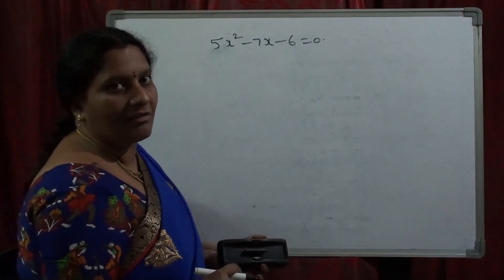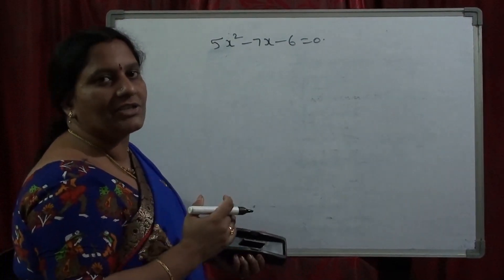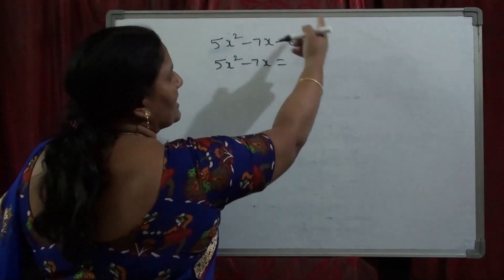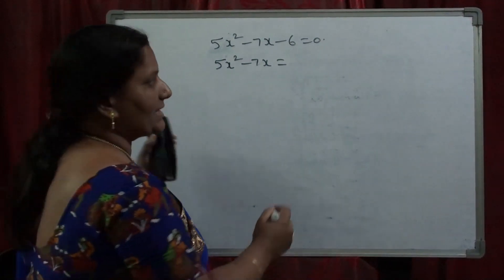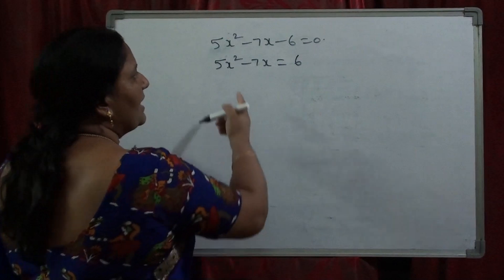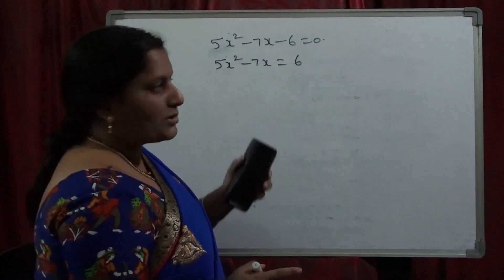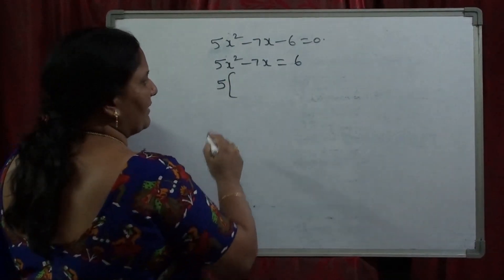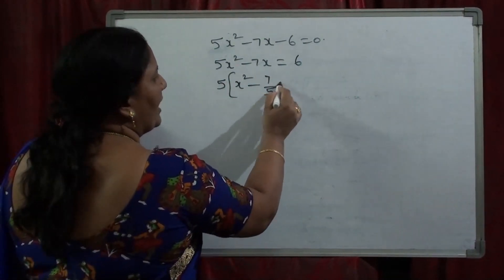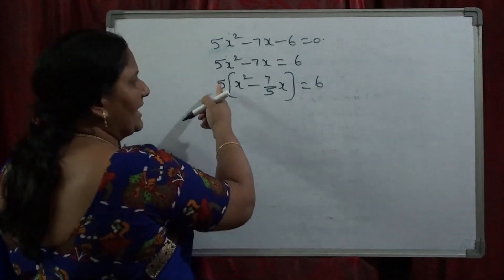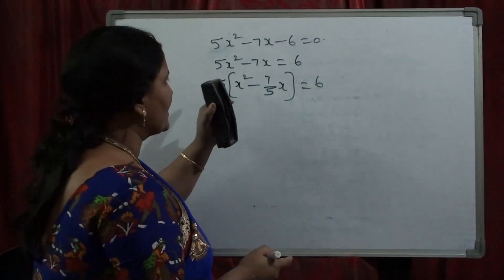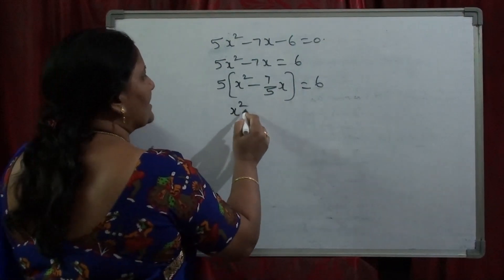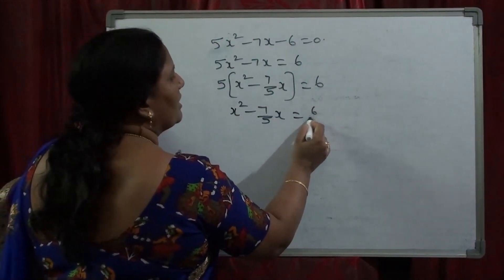Again, for finding the roots, the first step is to send the constant from LHS to RHS. So 5x² − 7x = 6. Next step is to make the x² coefficient equal to 1. Take out 5 as common from 5x² − 7x, giving x² − (7/5)x = 6. Then send the constant 5 from LHS to RHS, so 5 goes to the denominator and it becomes x² − (7/5)x = 6/5.